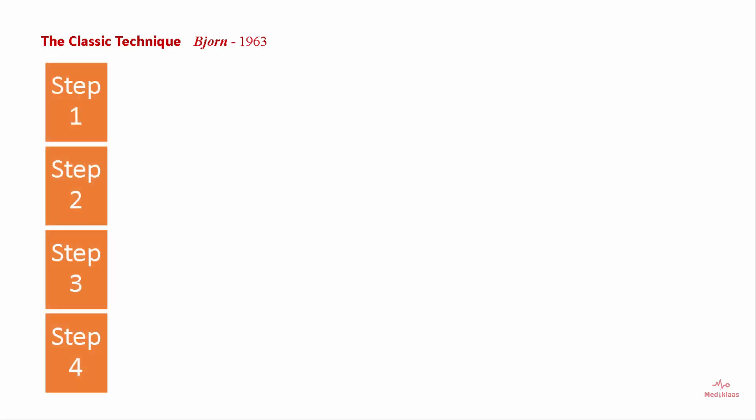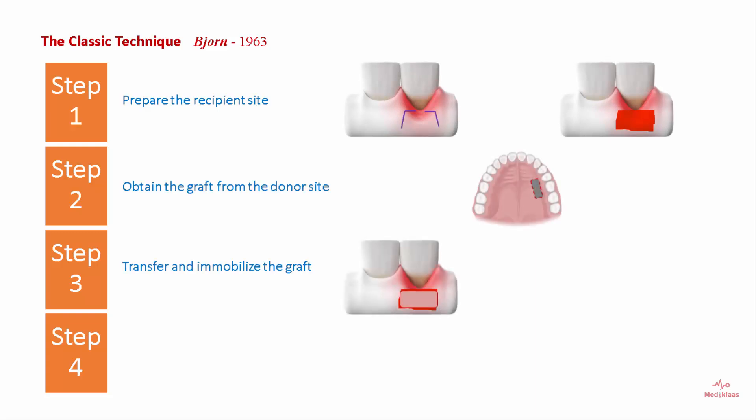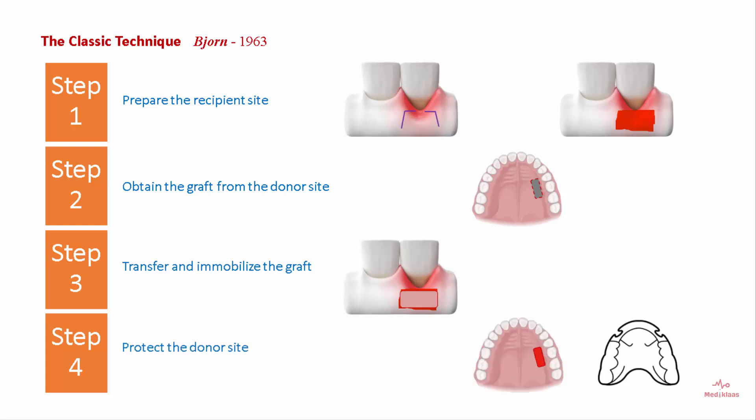The classic technique of free gingival graft harvesting was given by Bjorn in 1963 and involves four steps: Step one is preparation of the recipient site; step two is obtaining the graft from the donor site; step three involves transfer and immobilization of the graft; and step four is to protect the donor site.